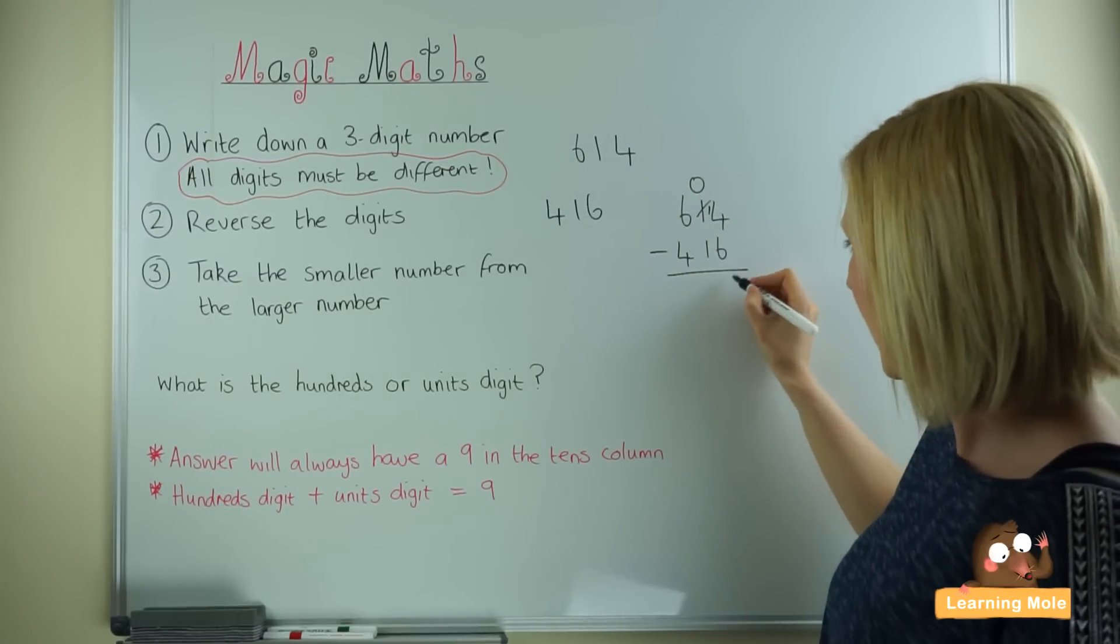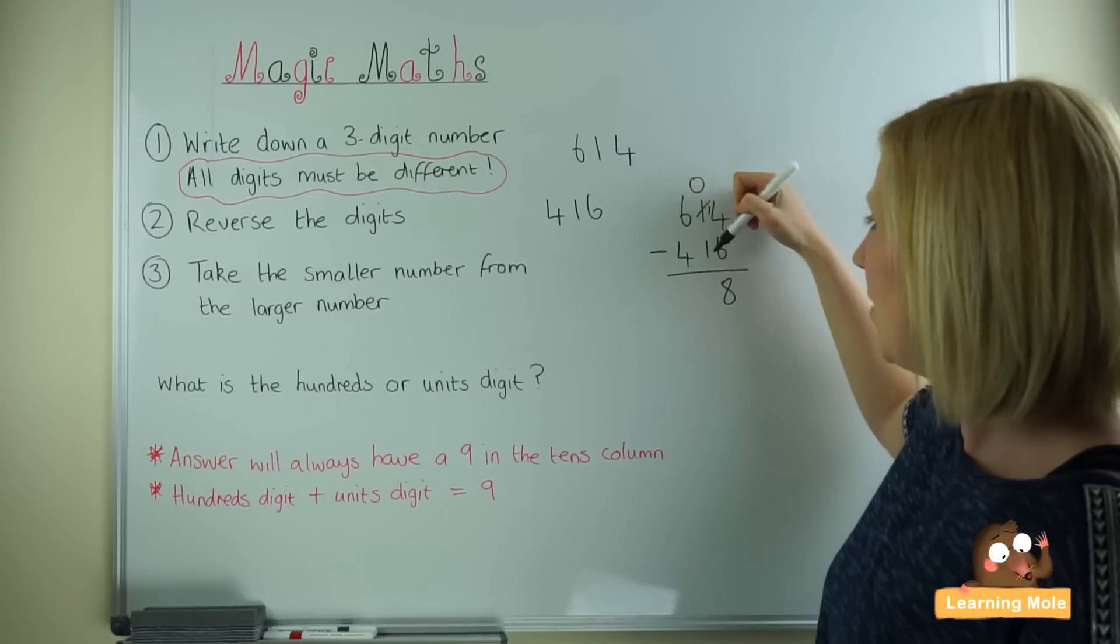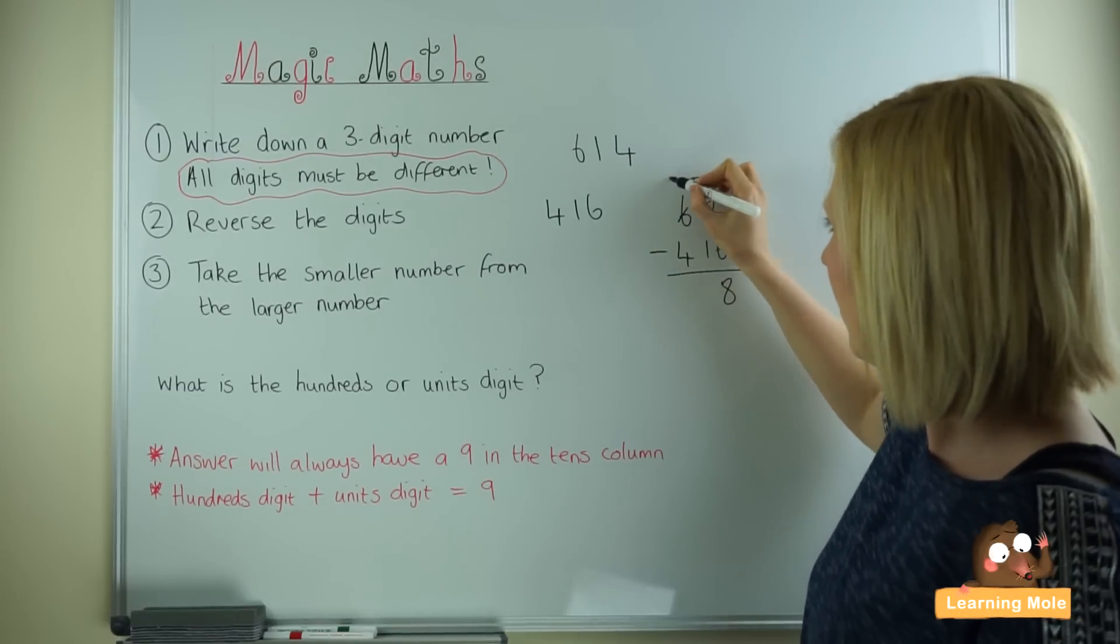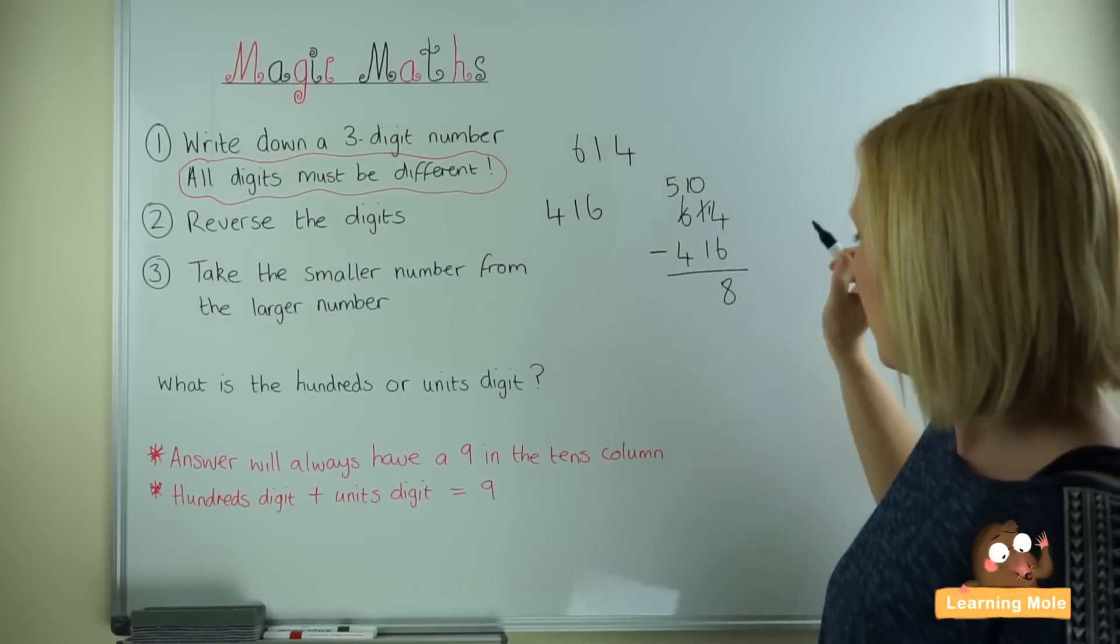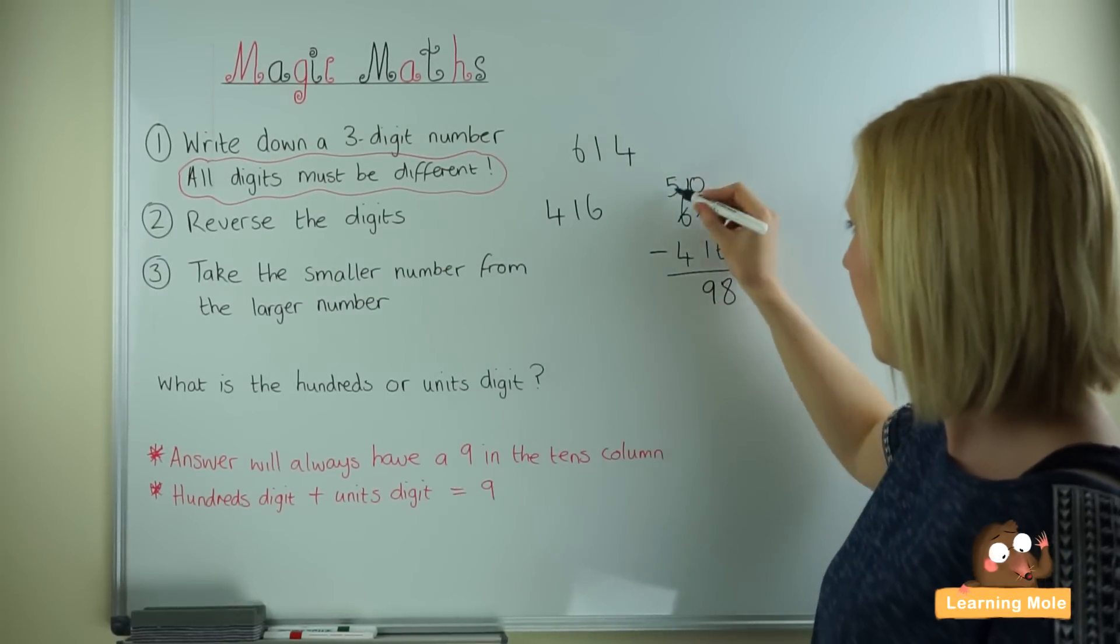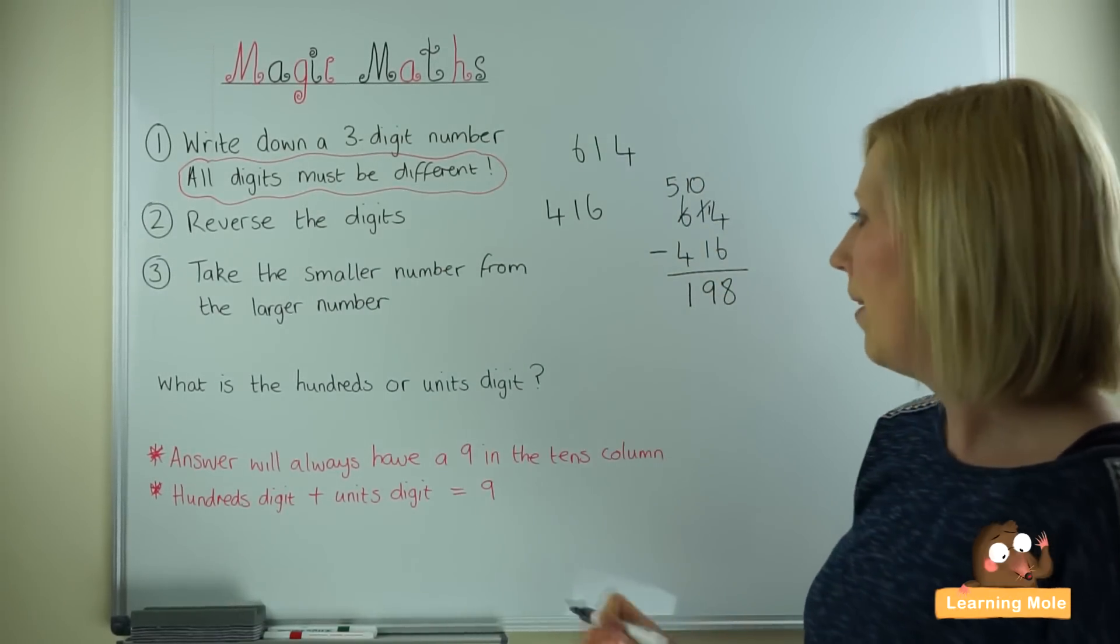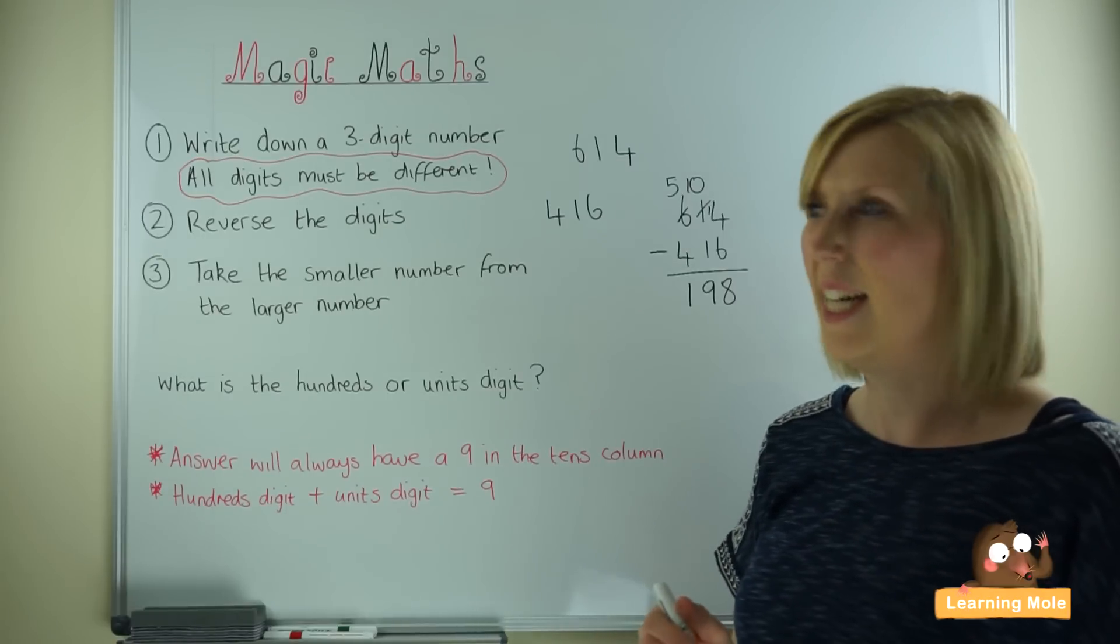0 take away 1 we cannot do, we have to borrow. 10 subtract 1 is 9. 5 subtract 4 is 1. So we are ending up with 198 again.